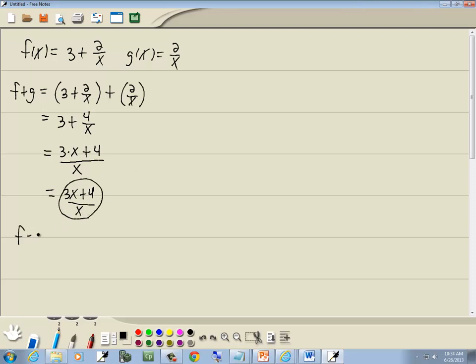Now f minus g. Again, we'll put parentheses around each one of them and put a minus between them. Now in this one, since these both have the same denominator, and this negative will flip the sign of that, when I combine these together, I've got 2 minus 2, which is 0 over x, which drops away. So we're just left with 3.